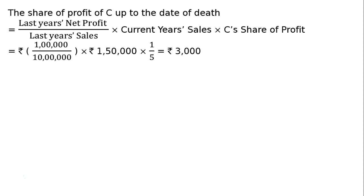Last year's profit was 1 lakh and last year's sale was 10 lakh, so the profit ratio is 10 percent. 1 lakh divided by 10 lakh is already 10 percent. This year's sale is 1 lakh 50,000, so we get 15,000.